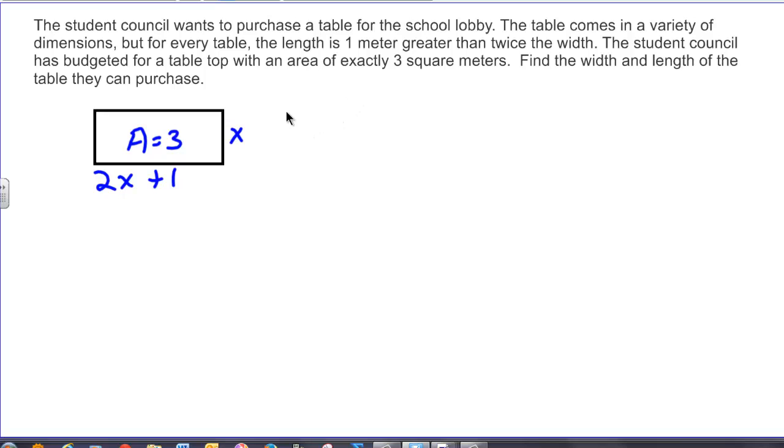So in order to do this we need to have an area equation for a rectangle. That's x multiplied by 2x plus 1 is going to equal 3. So in this case I distribute in. Get 2x squared plus x equals 3. I have a squared term which means I need to set aside equal to 0. So subtract 3 from both sides. Use my 5 step. x squared plus x minus 6 is equal to 0.